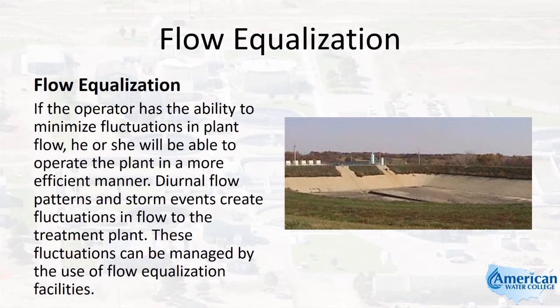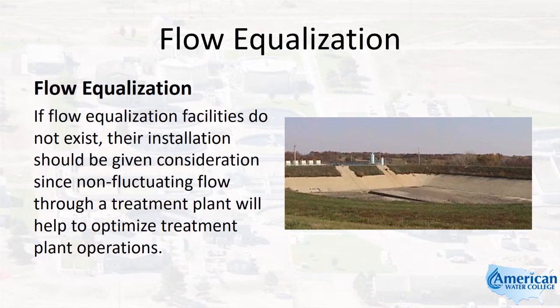If the operator has the ability to minimize fluctuations in plant flow, he or she will be able to operate the plant in a more efficient manner. Diurnal flow patterns and storm events create fluctuations in flow to the treatment plant. These fluctuations can be managed by the use of flow equalization facilities. If flow equalization facilities do not exist, their installation should be given consideration since non-fluctuating flow through a treatment plant will help to optimize treatment plant operations.